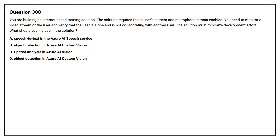Option A: Speech-to-Text in the Azure AI Speech Service. Option B: Object Detection in Azure AI Custom Vision. Option C: Spatial Analysis in Azure AI Vision. Option D: Object Detection in Azure AI Custom Vision.